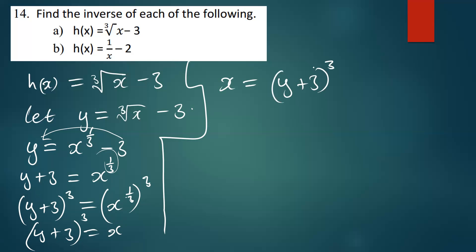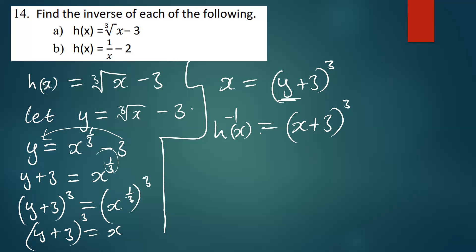After finding this, the next step is to write that in the correct format. So we say h inverse of x is therefore equal to — where there was y, I replace it with x — giving h inverse of x equals x plus three raised to the power three. This is how you find h inverse of x.